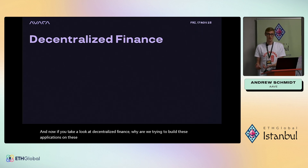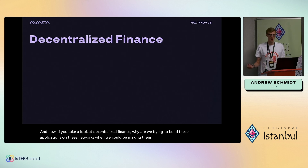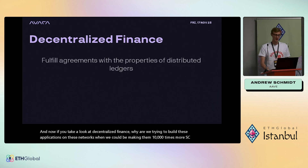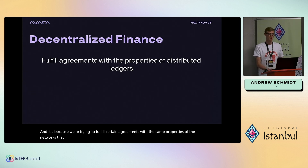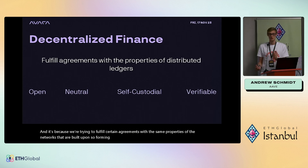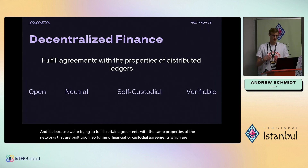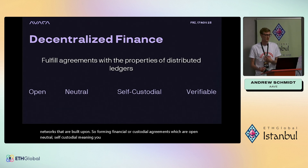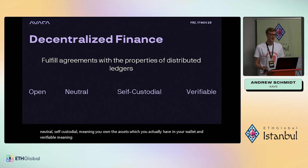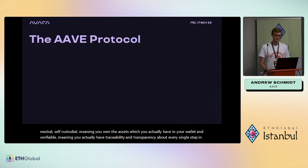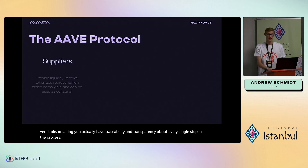If you look at decentralized finance, why are we trying to build these applications on these networks when we could make them 10,000 times more scalable? It's because we're trying to fulfill certain agreements with the same properties of the networks they're built upon — forming financial or custodial agreements which are open, neutral, self-custodial (meaning you own the assets in your wallet), and verifiable, meaning you have traceability and transparency about every single step in the process.